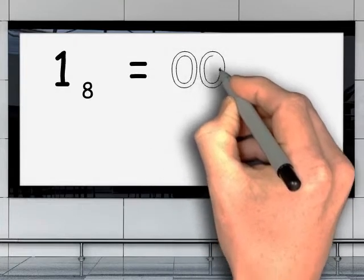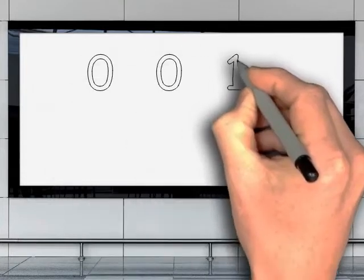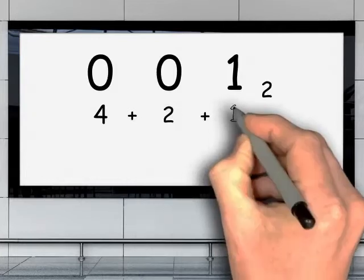For example, one octal is equal to 001 in binary. Three binary digits equal 4 plus 2 plus 1 decimal. And in binary, 1 means on and 0 is off.